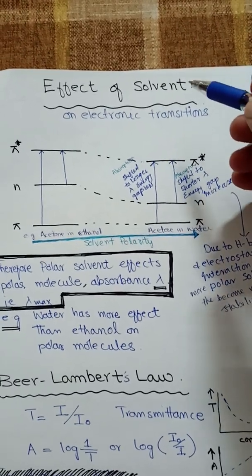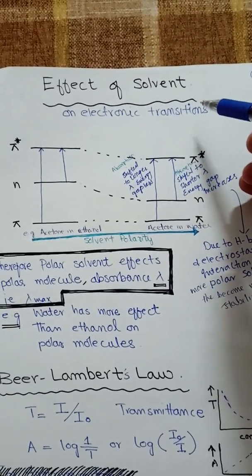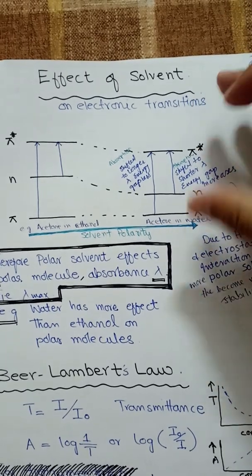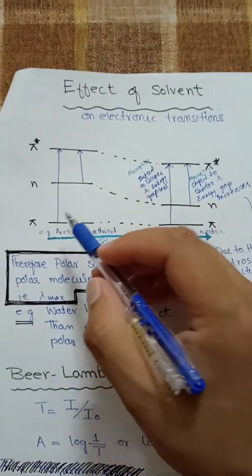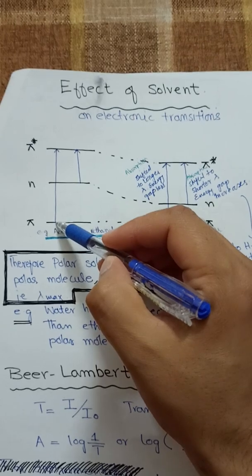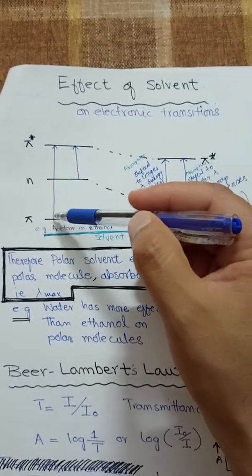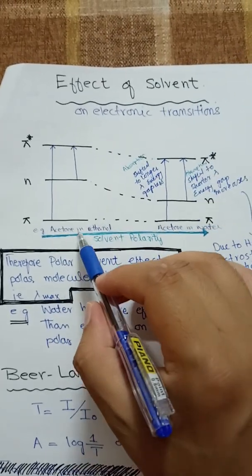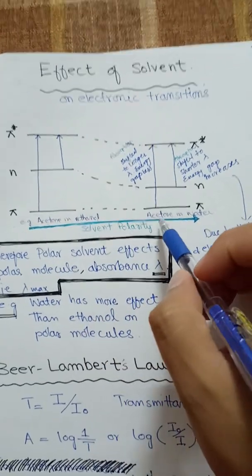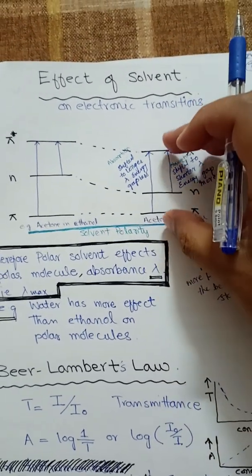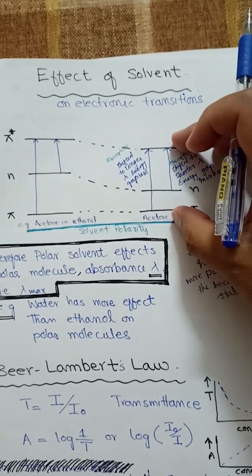Next, we should consider the effect of solvent on electronic transitions. This is commonly observed in polar molecules dissolved in polar solvents. For example, with acetone and ethanol, different transitions such as pi-to-pi* or n-to-pi* may occur. If solvent polarity is increased — for example, dissolving acetone in water — the energy difference between pi and pi* levels decreases.